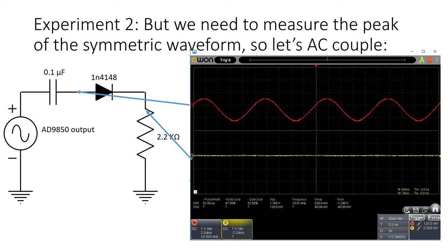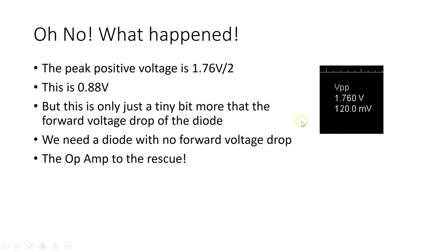So now we put our second scope probe on the resistor and nothing. Why is this? Well, if we go down to the peak-to-peak voltage measured by our oscilloscope, we can see here that it is about 1.8, a little bit under volts. And this means that the positive-going part of this, which is half of this, is about 8 or 9 tenths of a volt. But this is only a tiny little bit more than that forward voltage drop of the diode that we measured when we measured the characteristics of diodes and transistors in an earlier module. So the problem is the forward voltage drop of the diode is preventing us from measuring peak voltage properly. We need the world's most perfect diode with no forward voltage drop. Well, that doesn't exist, but this is where the op-amp comes to the rescue.